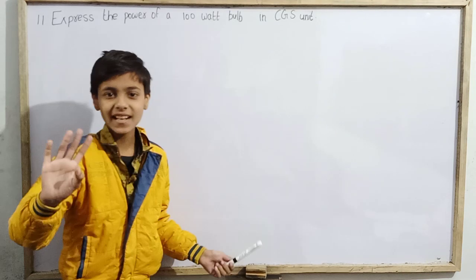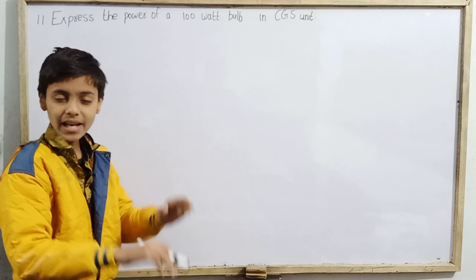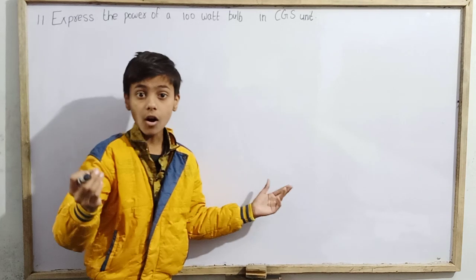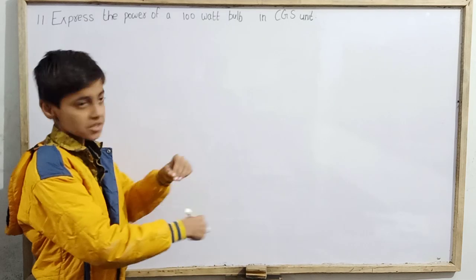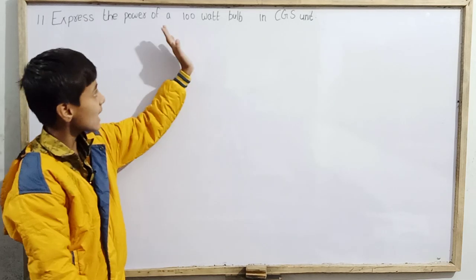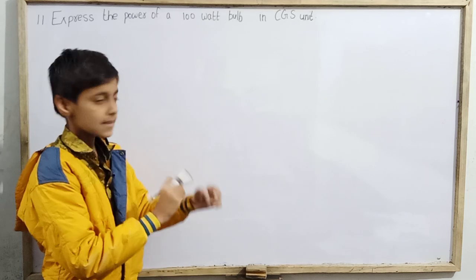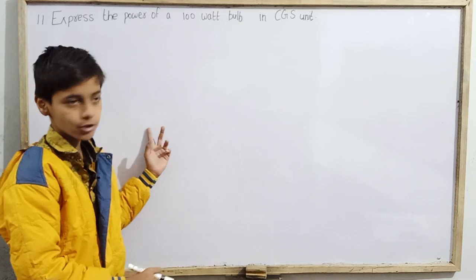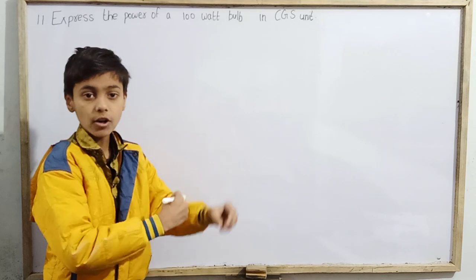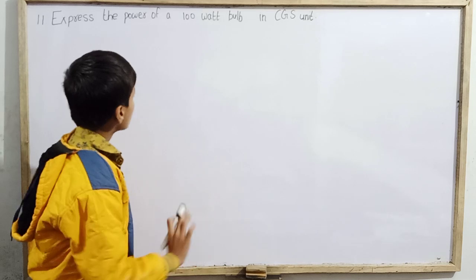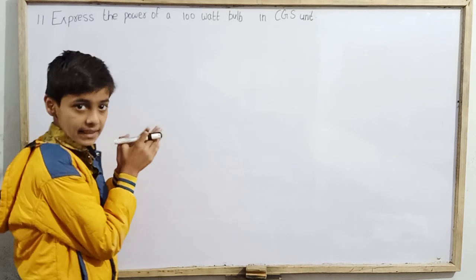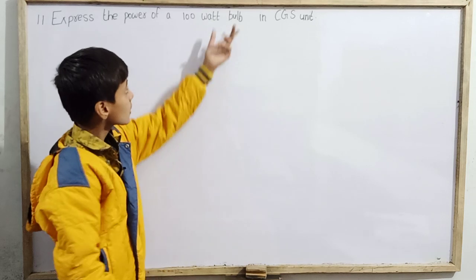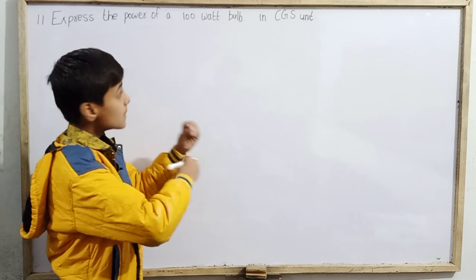What we need to do is: we have a 100 watt bulb. What is the SI unit of power? We declare the watt as the SI unit of power. So here we have 100 watts in SI units — that is the power of the bulb. Now let's convert this 100 unit to CGS unit.